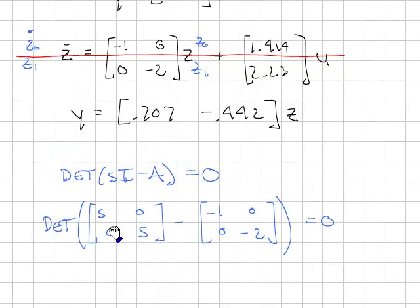So first, I'm going to fill in the values. Here's S times the identity matrix minus A. Here's my A matrix right there. Take the determinant of that. So I do the algebra here.